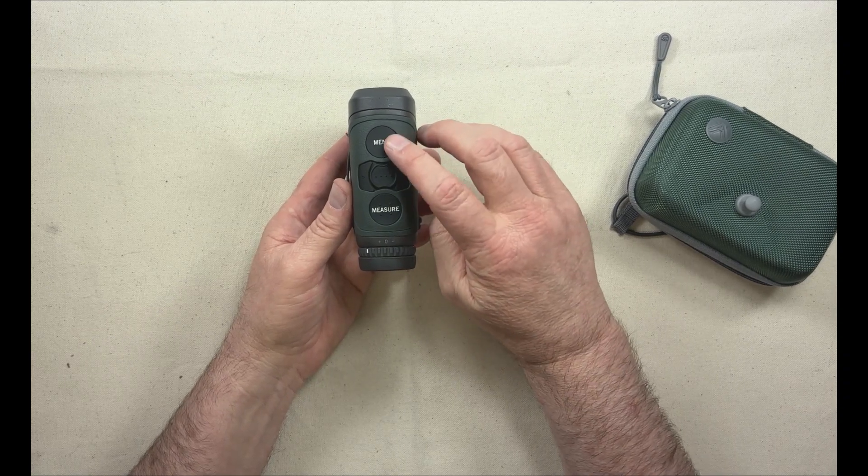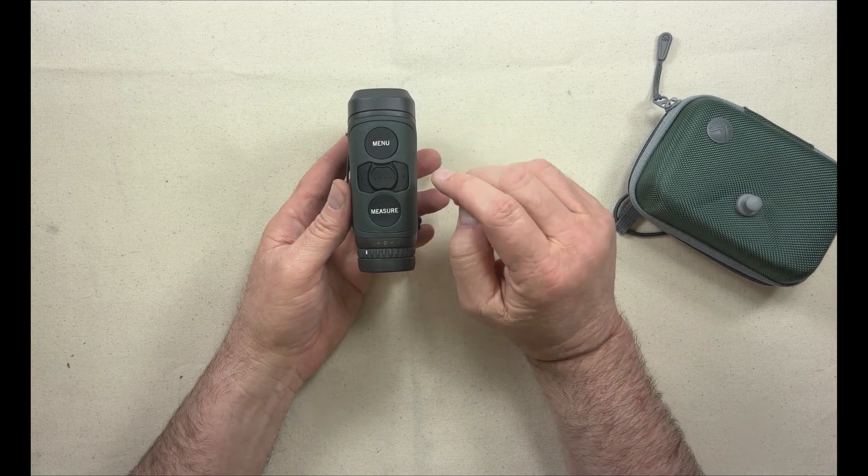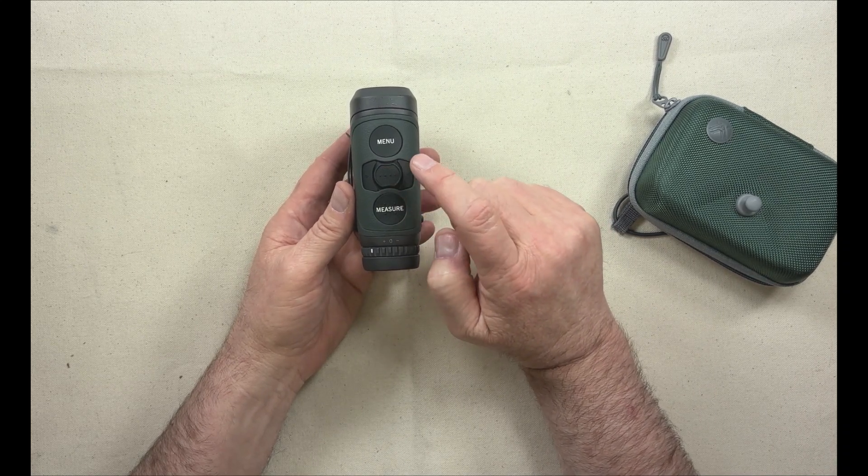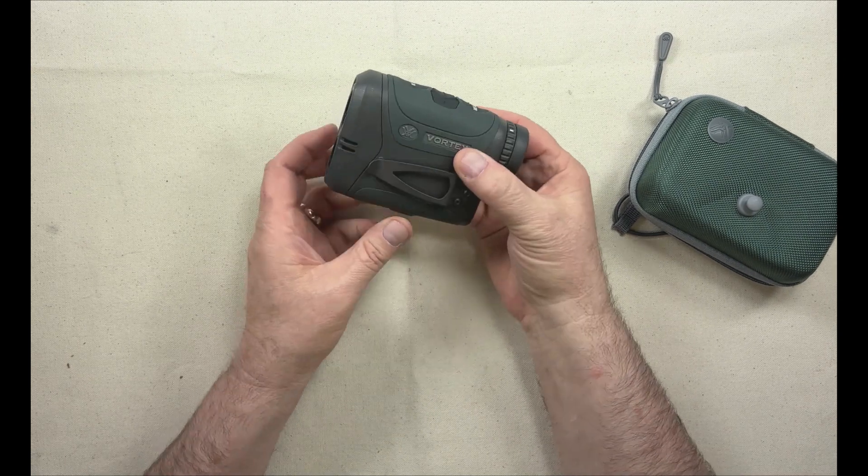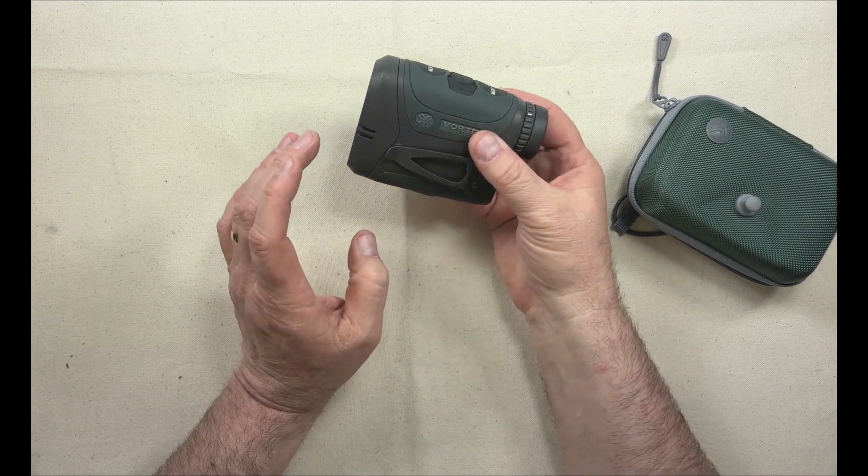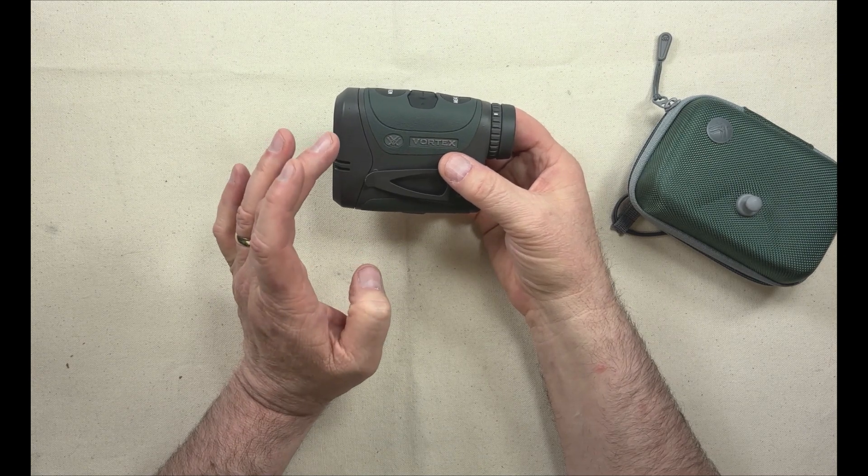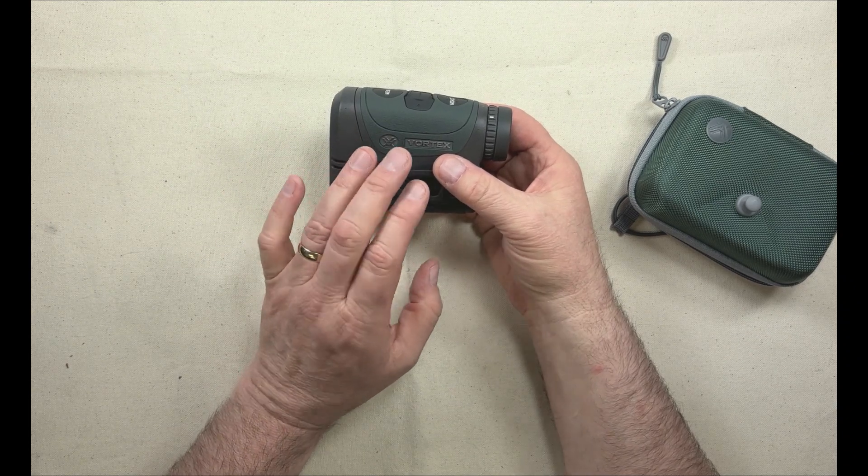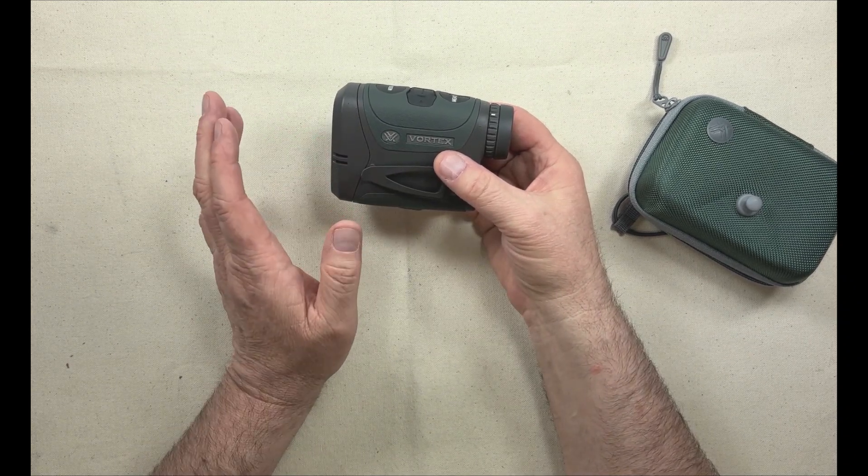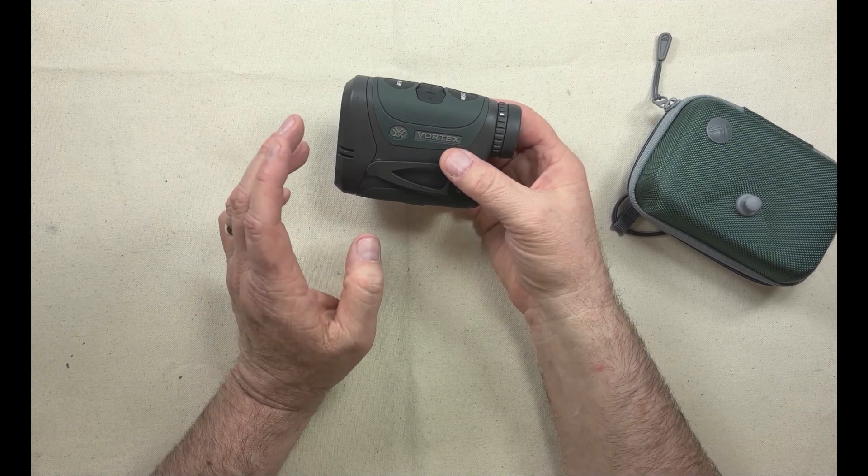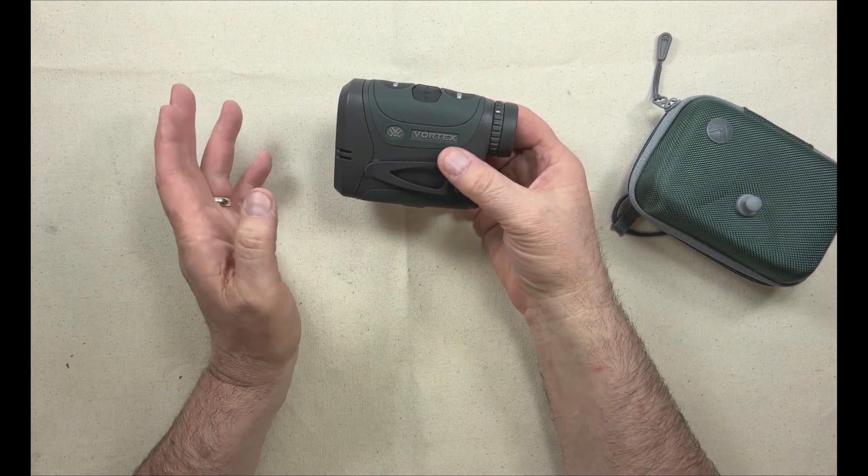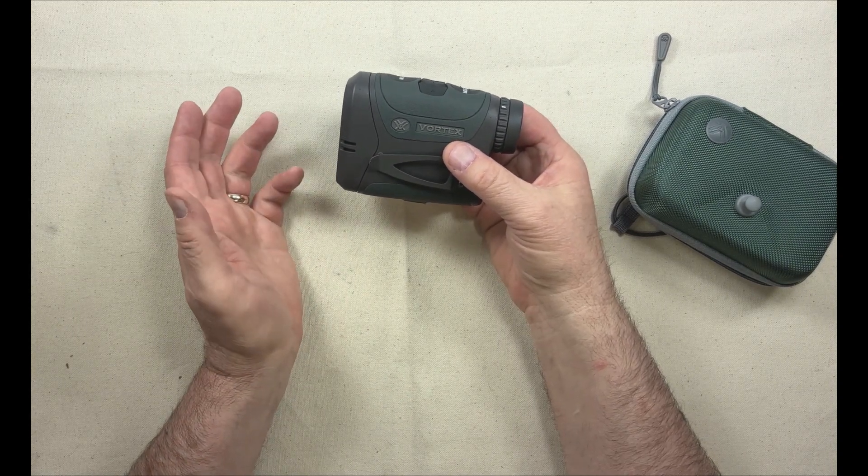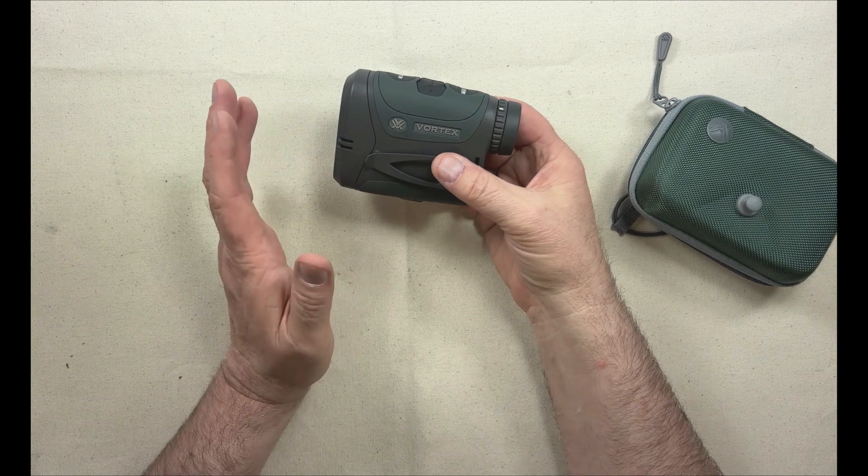This is the menu button where you can access the onboard menu, and then this is a button to help read wind. This unit actually has some onboard weather sensors, which you can use without the geoballistic app, or the geoballistic app also will integrate with a lot of the Kestrel products, which are basically wind meters and things like that.